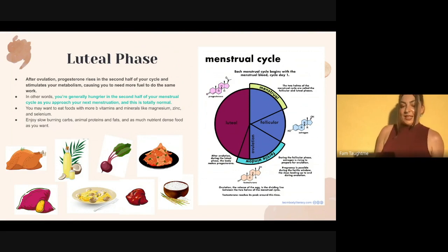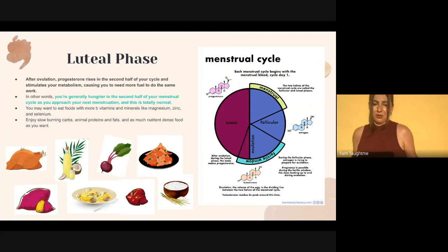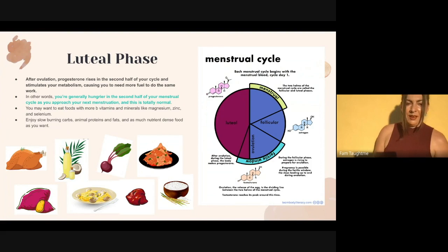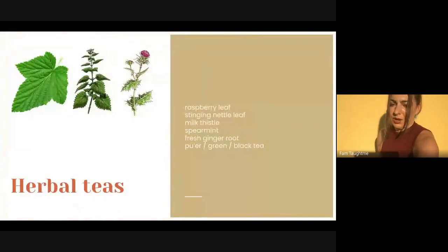After ovulation is the luteal phase. Progesterone rises in the second half of the cycle and stimulates our metabolism, meaning we burn more fuel to do the same work. You're going to naturally be hungrier in the second half of your menstrual cycle. This is totally normal. You may want to eat foods with more B vitamins and minerals like magnesium, zinc, and selenium, and enjoy lots of slow burning carbs, animal proteins, and fats.